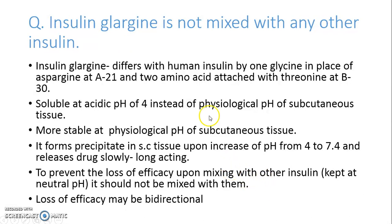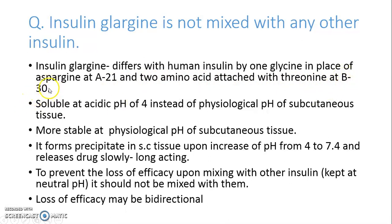The next question is: why is insulin glargine not mixed with any other type of insulin? There is a structural difference between insulin glargine and regular insulin. This differs by the position of an amino acid at the 21st terminal of the A chain. In insulin glargine, there is glycine in place of asparagine, and there is also the presence of two arginine amino acids attached at the 30th terminal of the B chain. Insulin glargine is soluble at acidic pH of 4, instead of the physiological pH of subcutaneous tissue.